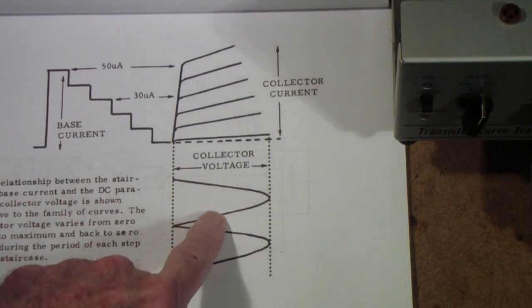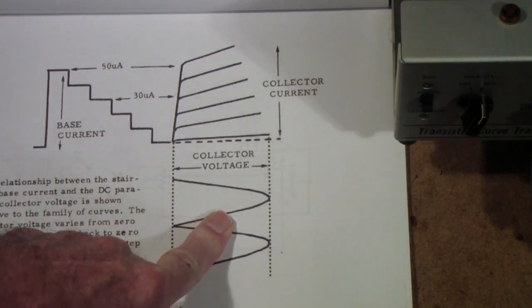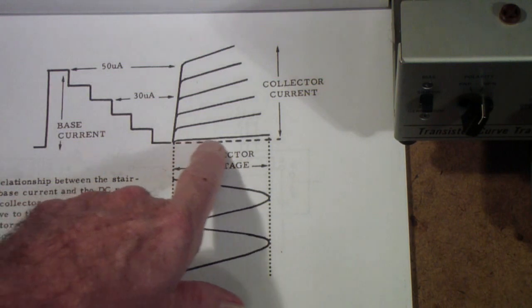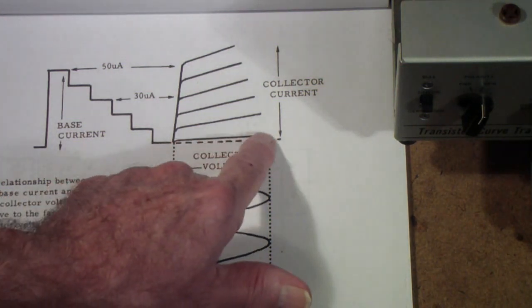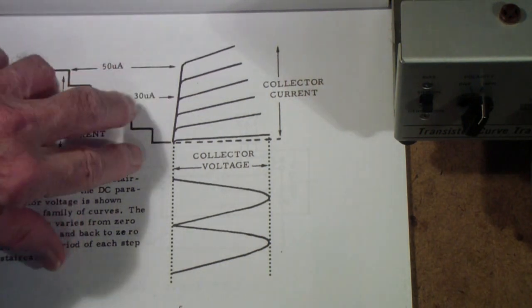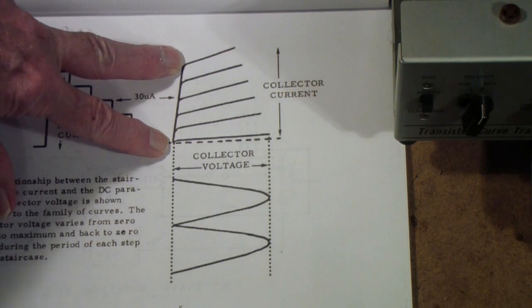To save money, they are actually driving this off of an AC signal, that is the AC power line. But the display then is the collector voltage sweeps the scope across on the x-axis, and then the y-axis is the current sensed through the transistor.